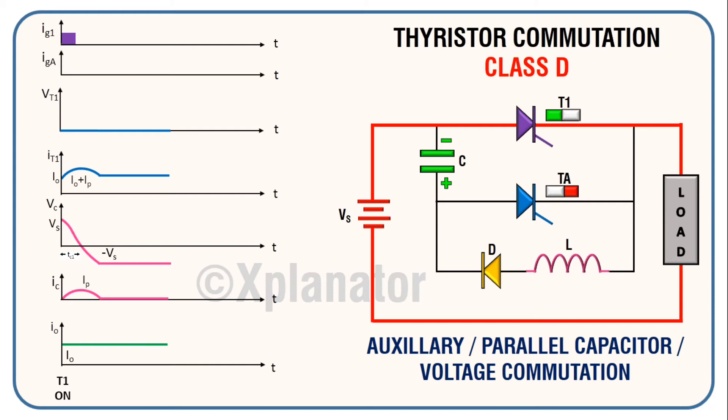Coming to the circuit again, to turn off thyristor T1, turn on the auxiliary thyristor TA. With this, current flows in the inner circuit. Capacitor voltage appears across thyristor T1 and it switches off due to reverse bias.